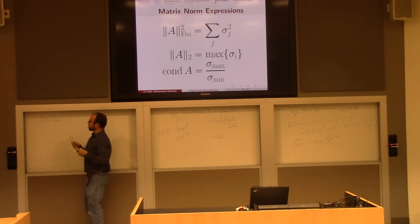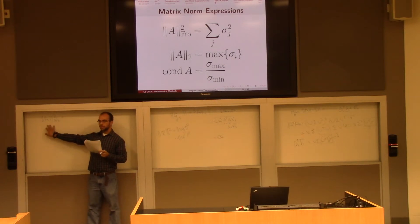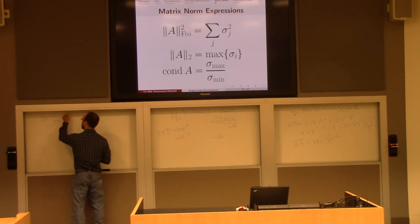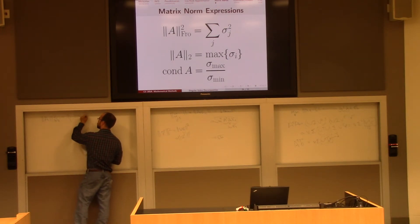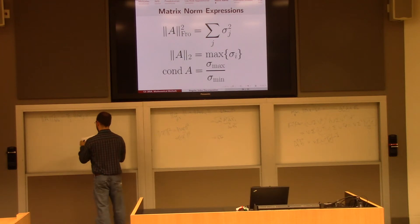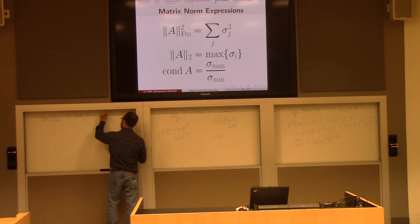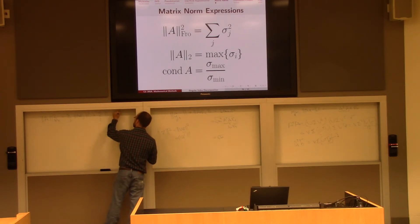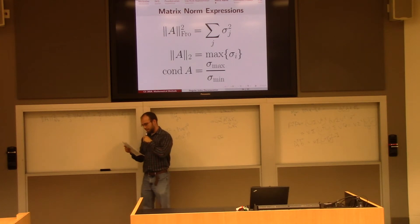So the Frobenius norm of A squared, well, so it's nothing more than the two-norm of each of the columns all sum together. One way to think about it. Okay, this is a vector now. So this is just iterating over each of the columns and taking two norms squared. But we know that A is now going to be u sigma v transpose vj.